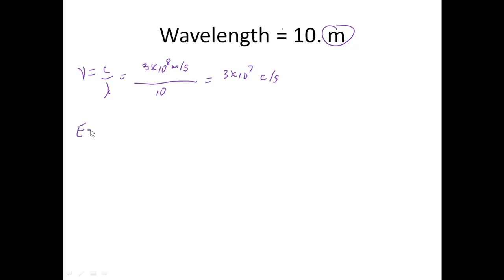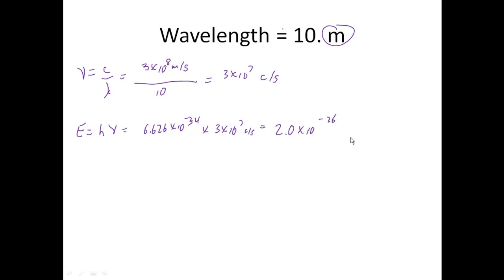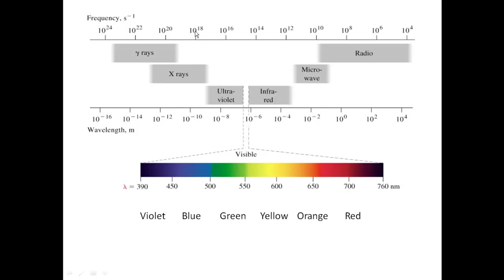And we want to calculate our energy, which is h times the frequency. So it's 6.626 times 10 to the minus 34th times 3 times 10 to the 7th cycles per second. And that's going to give us 2.0 times 10 to the minus 26th joules. So 3 times 10 to the 7th cycles per second — 10 to the 7th is right there on the chart. And remember that our wavelength was 10, which is 10 to the 1st — so we're sitting in radio waves.